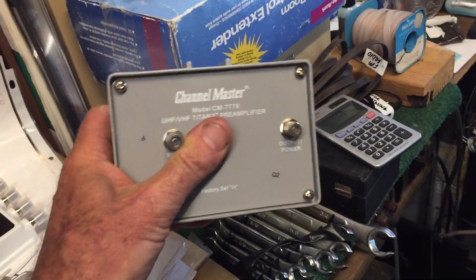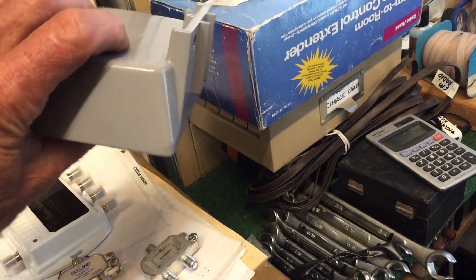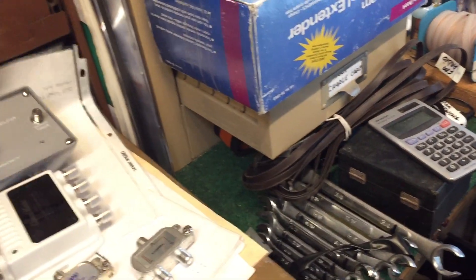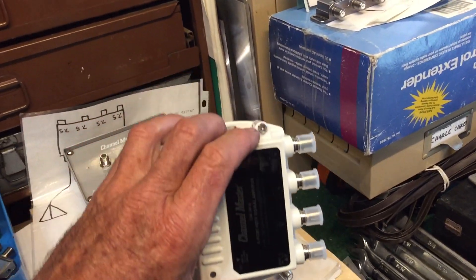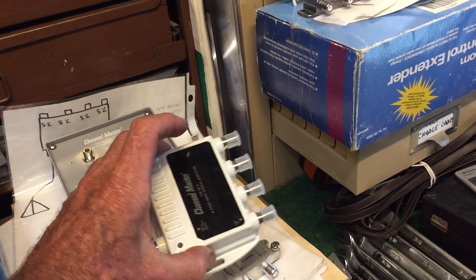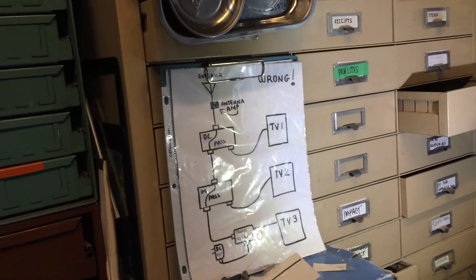There's the actual preamp right there. This is the part that goes on the mast. That's a distribution amplifier. There we have it.